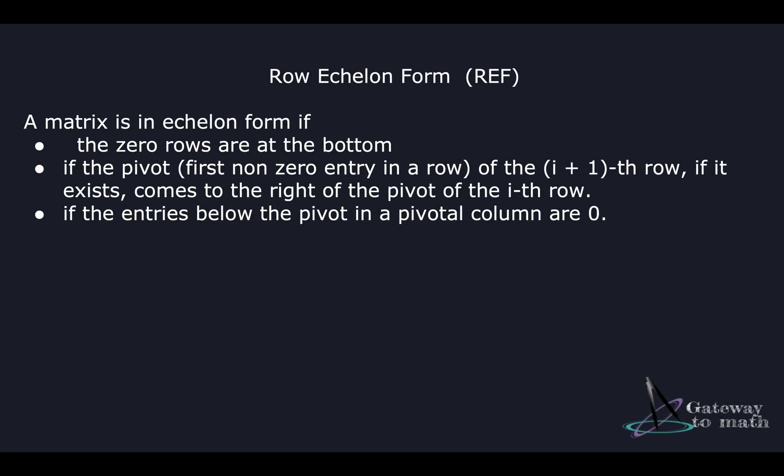The first thing we need to understand is what exactly a row echelon form is. A matrix is in echelon form if: the zero rows are at the bottom; the pivot — which is the first nonzero entry in a row of the i+1 row, if it exists — comes to the right of the pivot of the i-th row; and the entries below the pivot in a pivotal column are zero. These are the three conditions for a matrix to be in row echelon form.